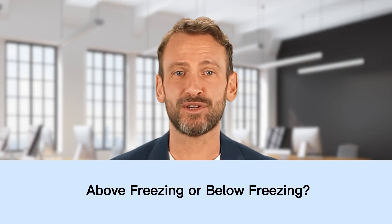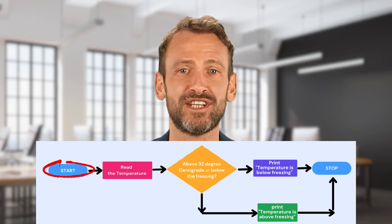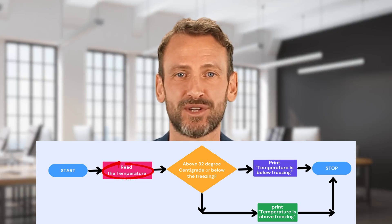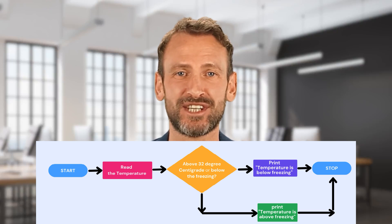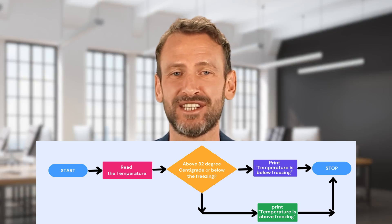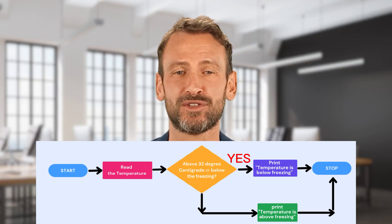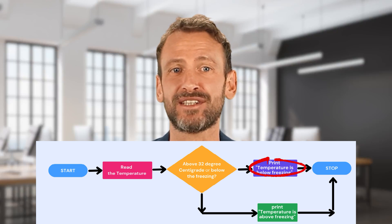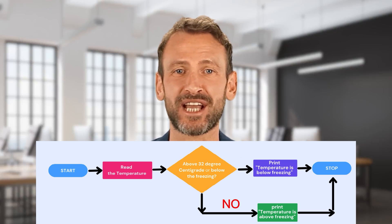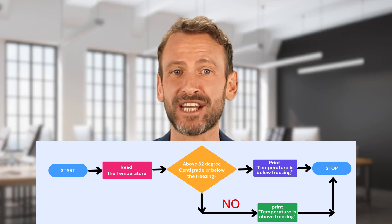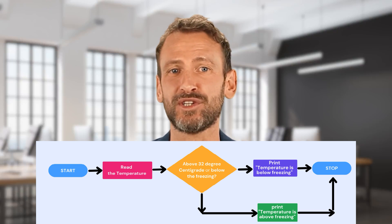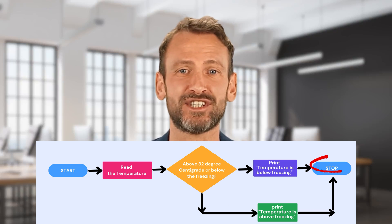Let's understand a simple example of a flowchart. We want to check the temperature — whether it is above freezing or below freezing. We start with an input to read the temperature into an input/output block, then proceed to a decision block to check whether the temperature is above or below 32 degrees. If yes, it is less than 32 degrees, it prints 'temperature is below freezing.' If no, temperature is greater than 32 degrees, it prints 'temperature is above freezing,' which ends the process as the decision has been made.